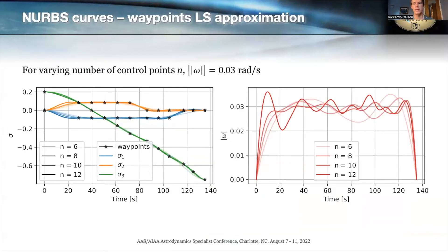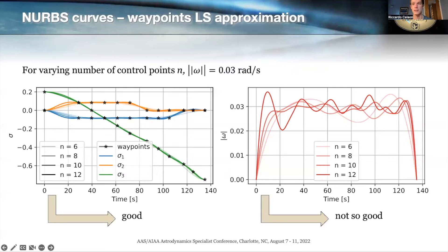For varying numbers of control points, we get different fits using NURBS for the same set of waypoints. With N equal to 6 we get a looser fit where the curve doesn't get as close to the waypoints, whereas with N equal to 12 the curve matches the waypoints quite precisely. However, the issue with this first implementation is that the angular rate norm doesn't quite match the constant angular rate profile of 0.03 radians per second we want to achieve — it floats around the desired value but doesn't stay there. Attitude-wise the curves provide a good approximation, but regarding angular rates, they're not quite there yet.